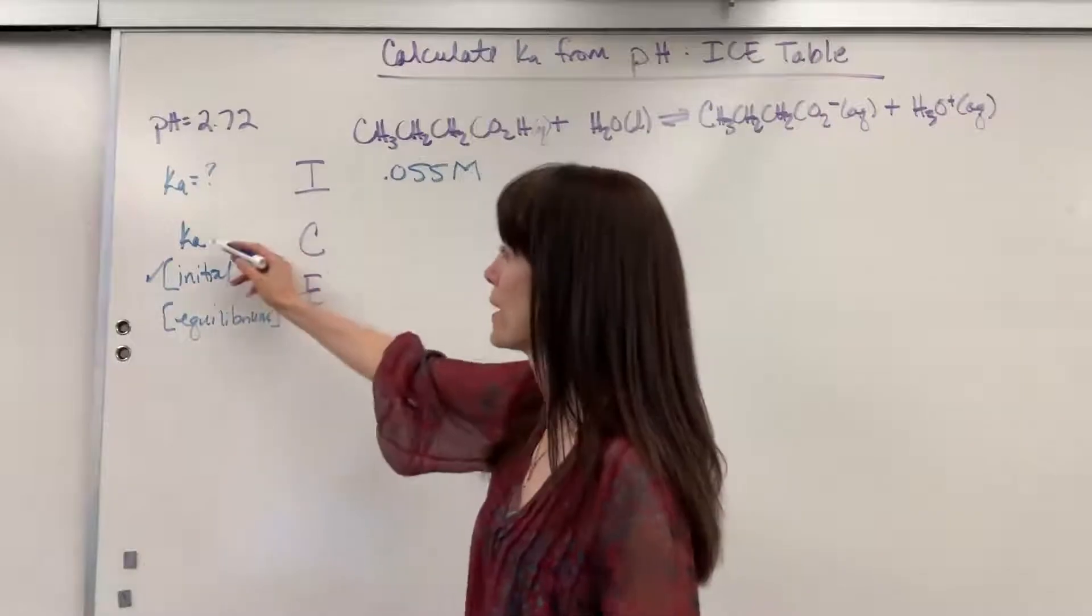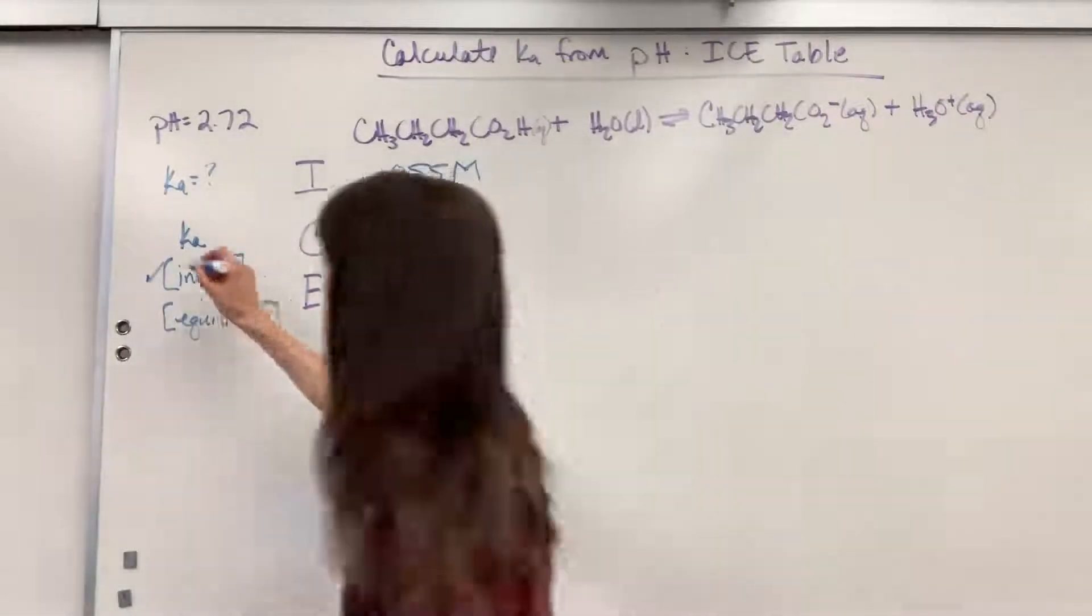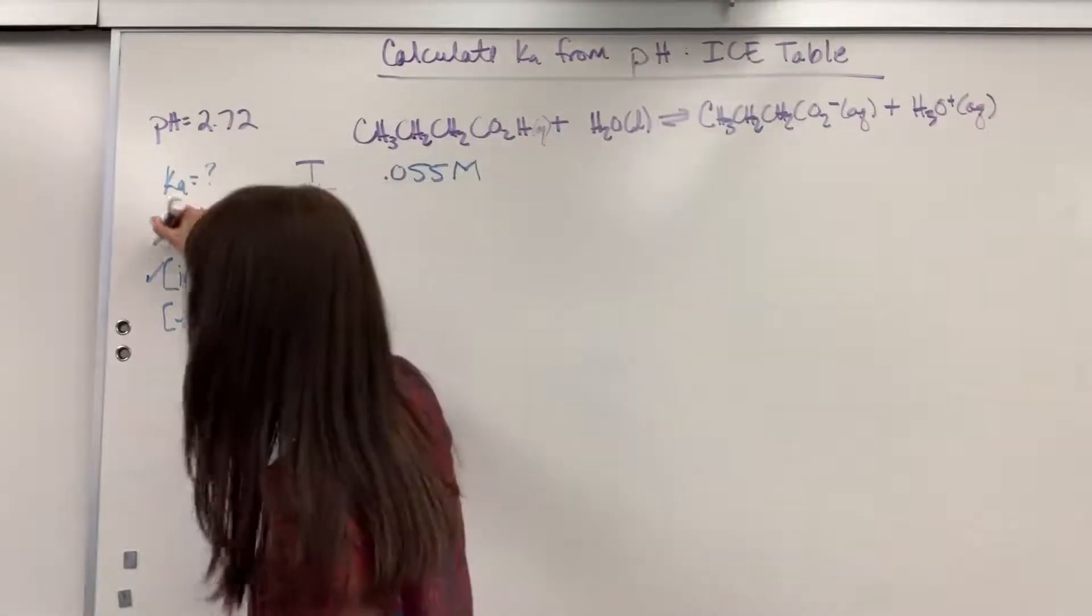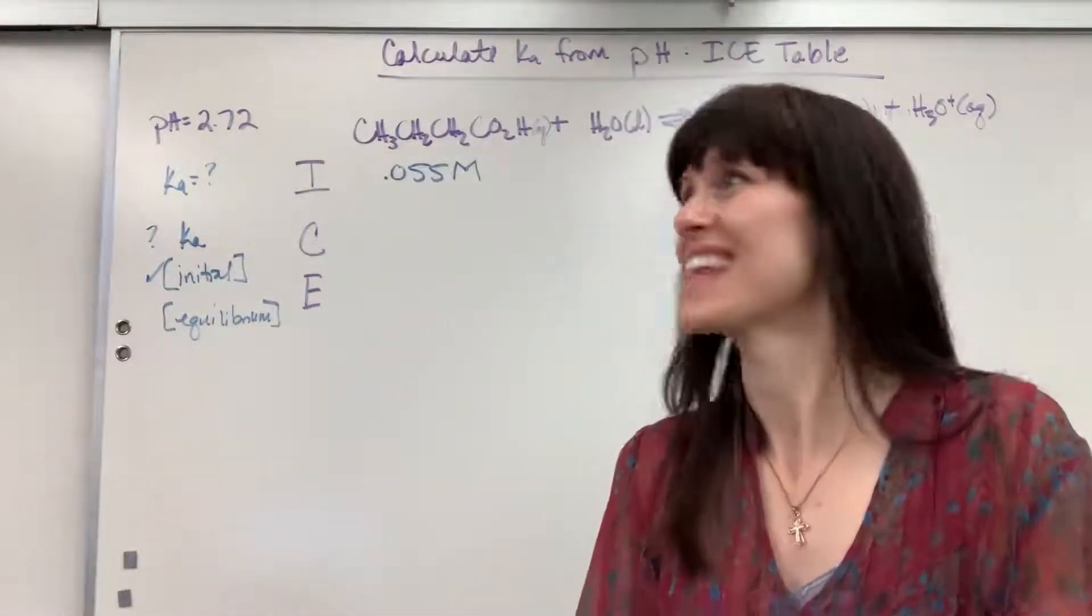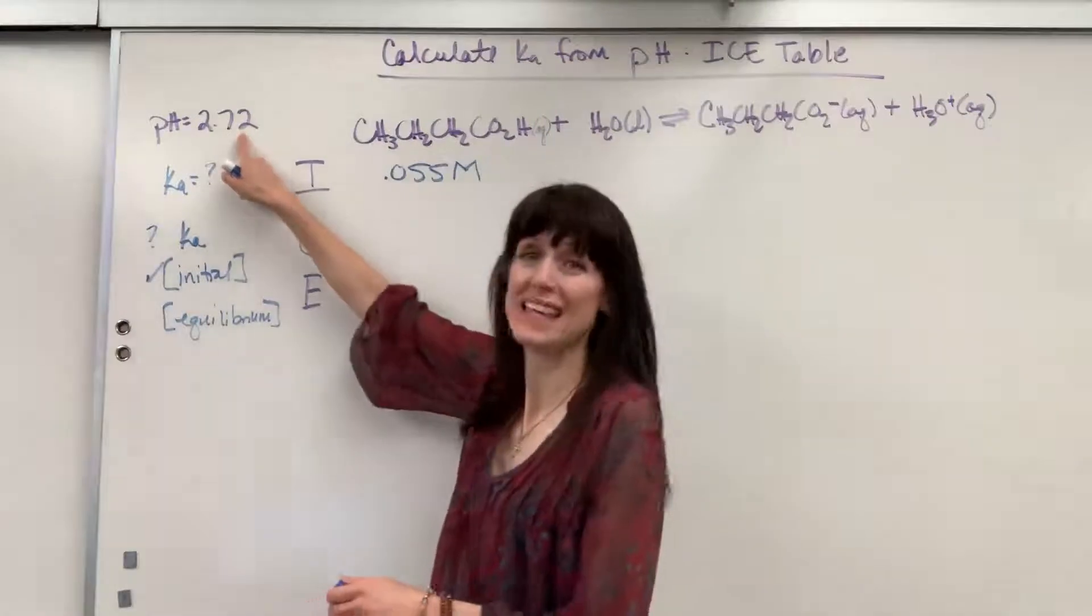We've got one right there. They want Ka. That's my unknown. But in order to find out that unknown, I need the equilibrium concentration. Guess what? That comes from the pH.